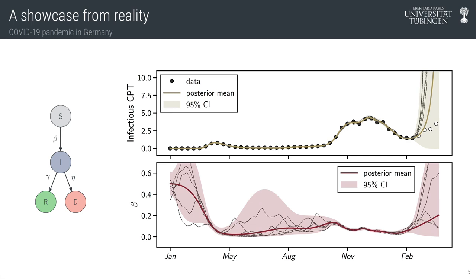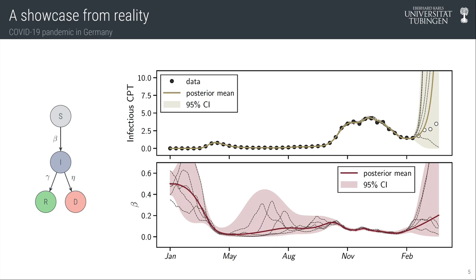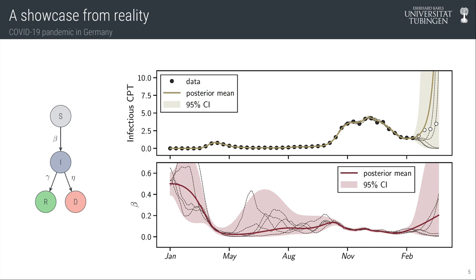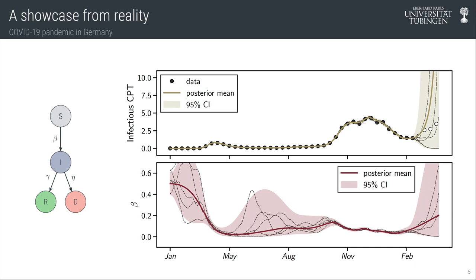Here on top you see the posterior solution of the ODE. The model extrapolates without information from February onwards on the right. On the bottom you see the inferred contact rate beta. It is uncertain in the beginning and contracts when the dynamics in the data exhibit informative behavior, as for example around April. Over the summer the uncertainty is high due to low case counts.